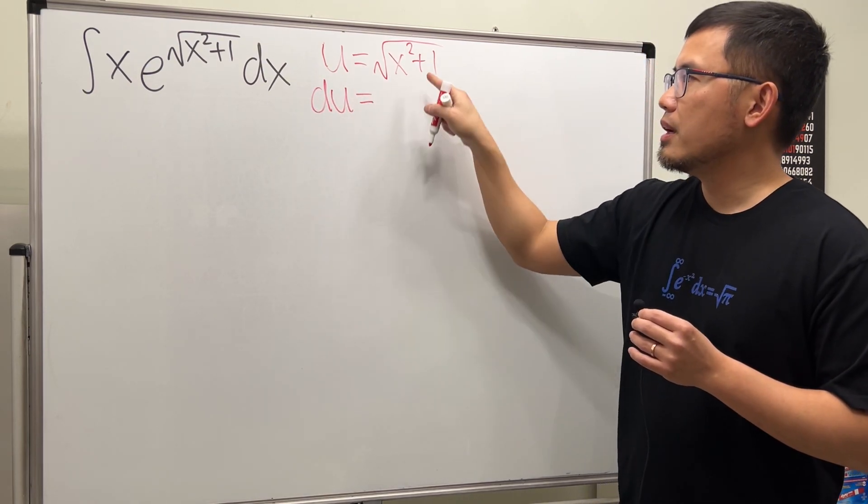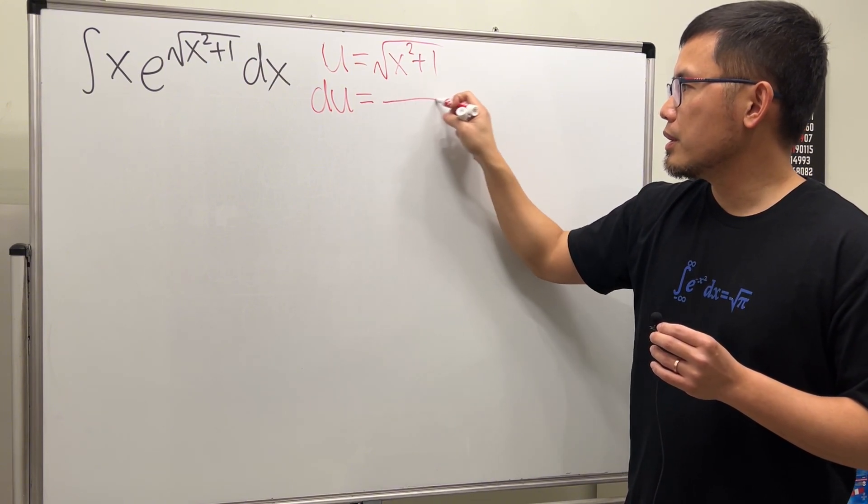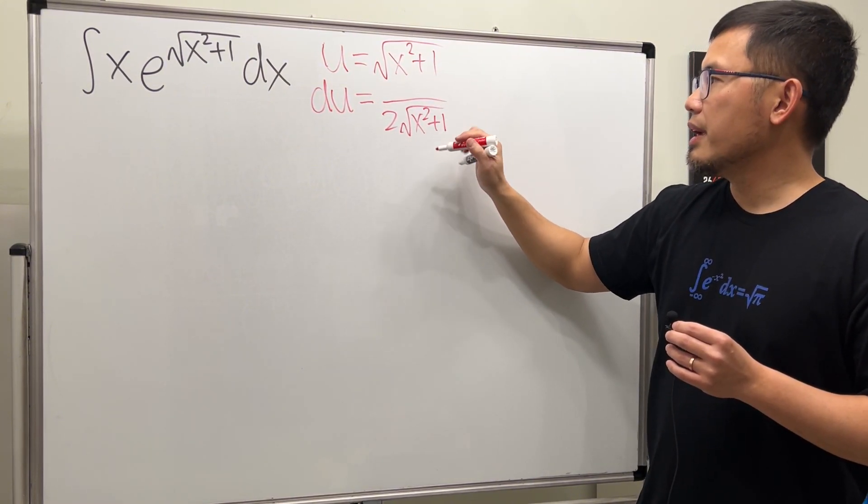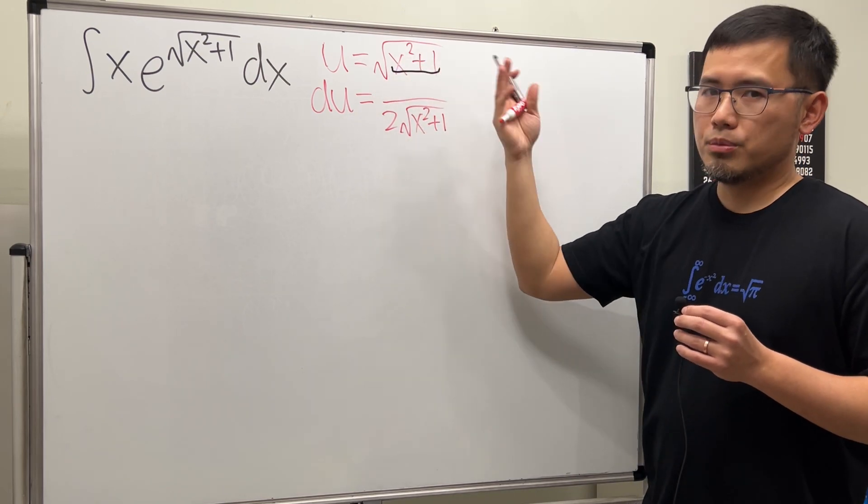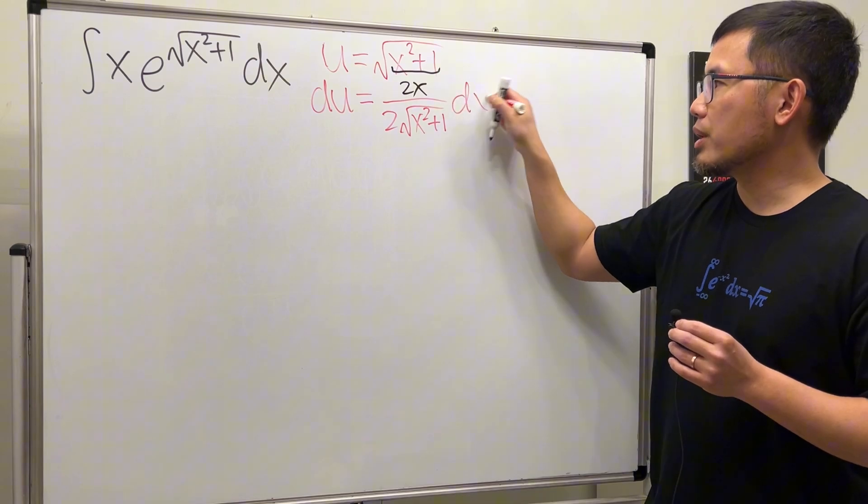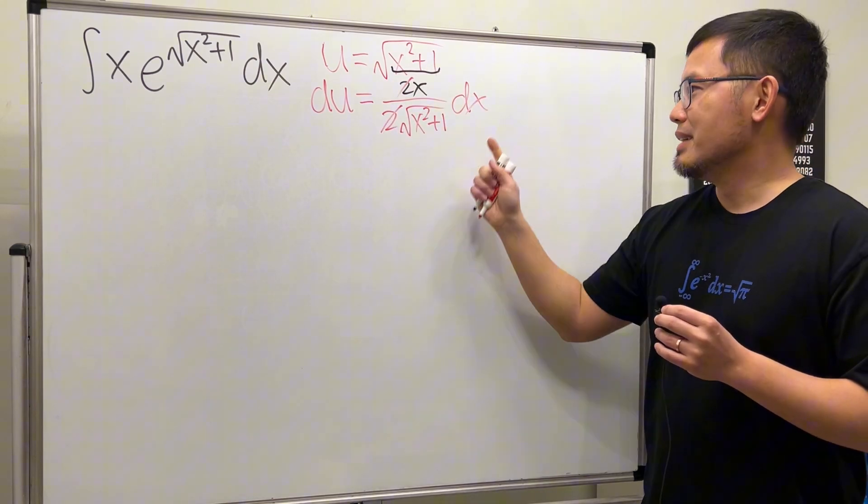Do the usual business, take the derivative both sides. We get du equal to the derivative of square root function, we get 1 over 2 square root of the same thing right here, and then don't forget the chain rule, multiply by the derivative inside. We need a 2x and then we have the dx right here.